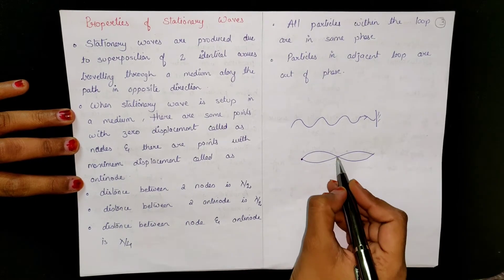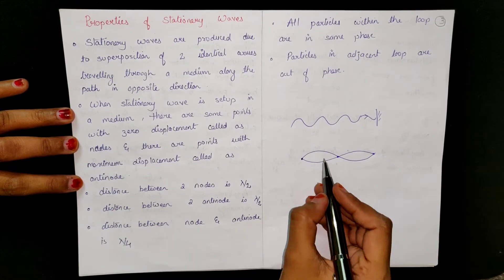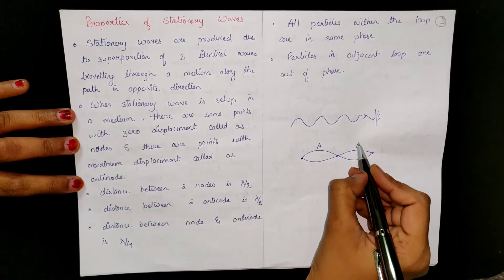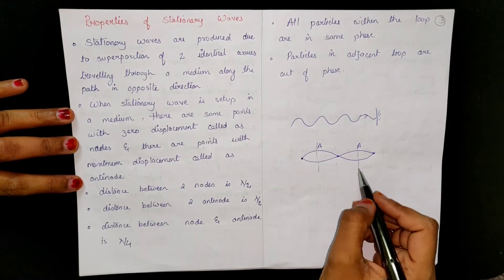These are the points we call nodes which are not displacement, and these are the points we call anti-nodes. This is the maximum amplitude displacement.